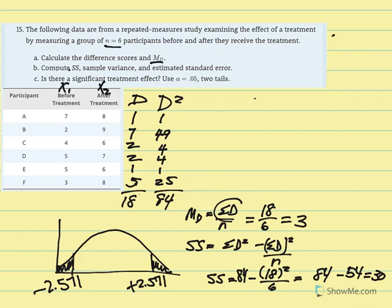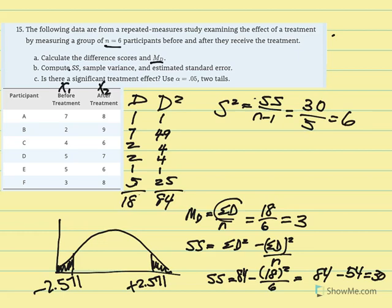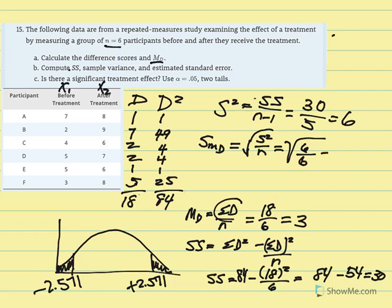Given that, we can calculate our variance. Variance is equal to SS over N minus 1, so 30 over 5, which equals 6. Now we can calculate our estimated standard error of the mean difference, which we need for our T statistic. We take the square root of variance divided by N: the square root of 6 divided by 6, which equals the square root of 1, which equals 1.